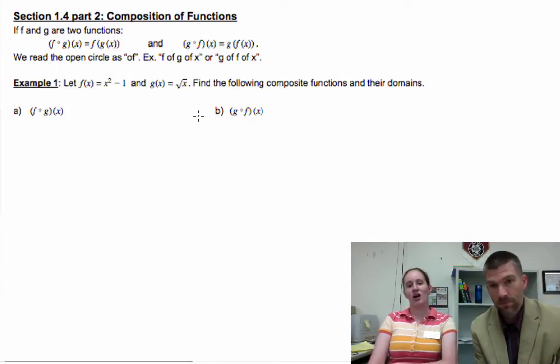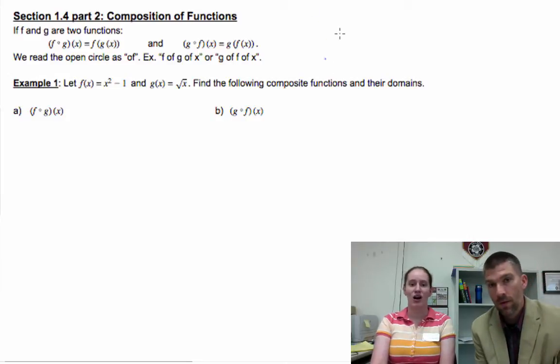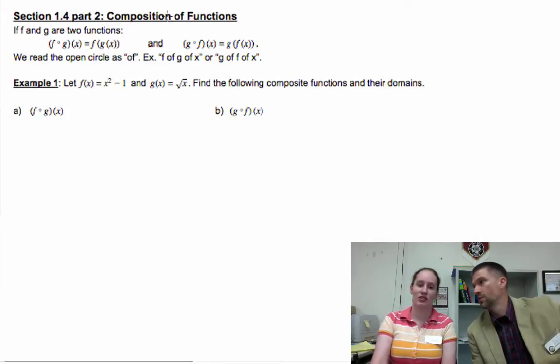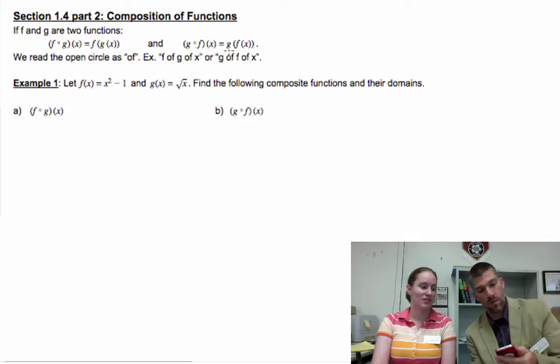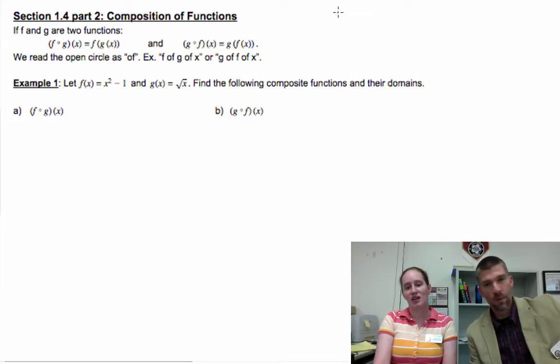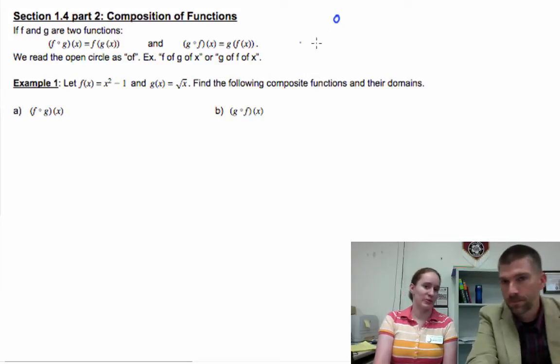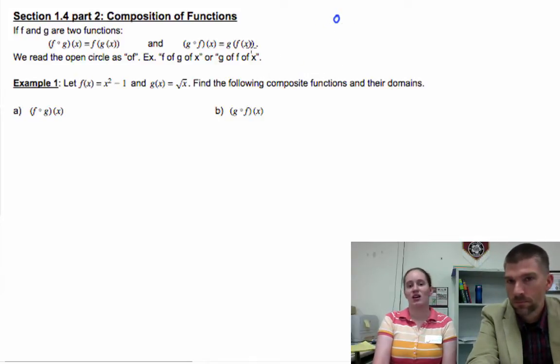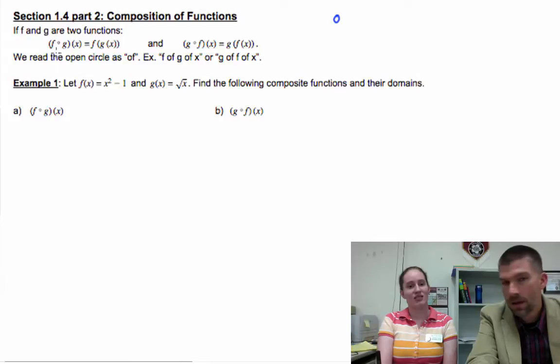And now 1.4 part 2: composition of functions. This is like a new operation that only works with functions, and what it does is it lets us plug one function into another function. So the way we represent the composition of functions operation is with an open circle. A closed dot would be multiplication, but an open looking dot is composition. It's like you're looking at a fog.